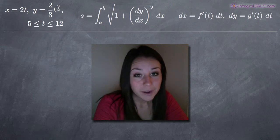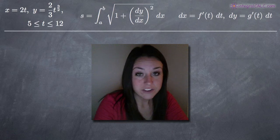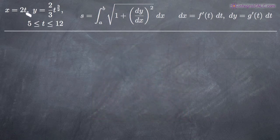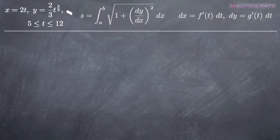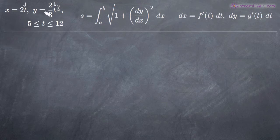In this particular problem, we've been given two equations that define our parametric curve as always. One equation for x: x equals 2t, and one equation for y: y equals 2/3 t to the 3/2. Remember that with parametric curves, you always have an equation for x and y that are both defined in terms of a parameter t. Those two equations together make up a single parametric curve.